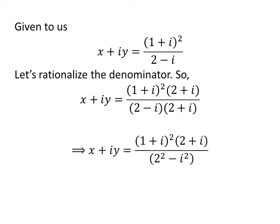In the above expression, we can see the denominator is in the form of (a minus b)(a plus b), which is equal to the square of a minus the square of b. So we can rewrite the expression as x plus i times y is equal to the square of (1 plus i) times (2 plus i) upon the square of 2 minus the square of i.